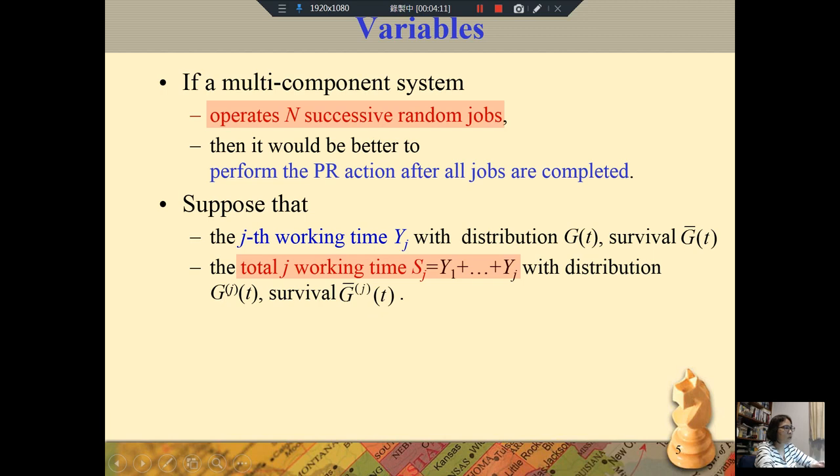If a multi-component system operates in successive random jobs, then it would be better to perform the PR action after all jobs are completed. Suppose that the j-th working time Yj with distribution Gj(t), survival Ḡj(t). The total working time Sj equals Y1 plus Yj with distribution Gj(t), survival Ḡj(t).